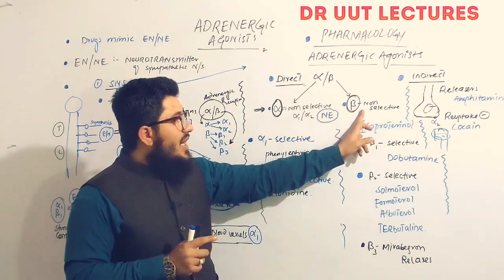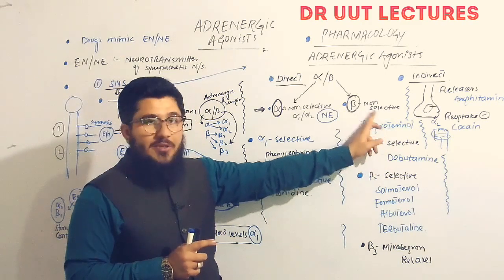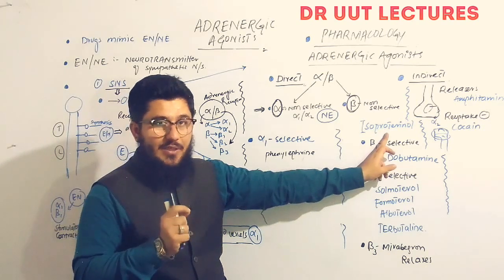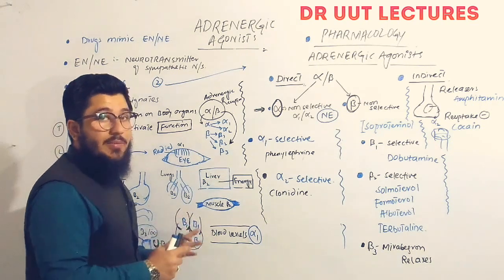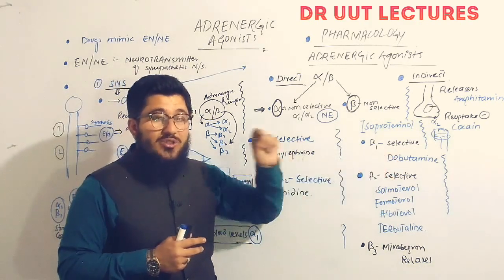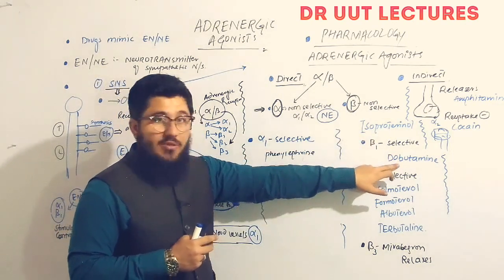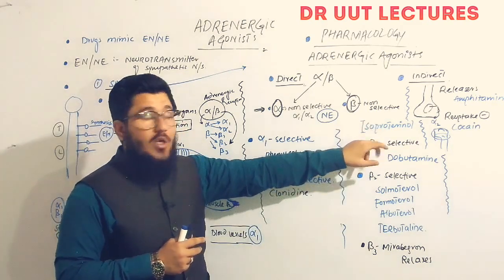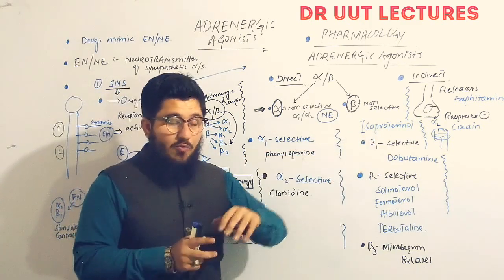Beta non-selective drugs — isoproterenol is a good example — act on both beta-1 and beta-2 receptors. Its most notable action is on beta-1 receptors, which are mostly found on the heart, causing increased heart rate and contraction. Beta-1 selective drugs, such as dobutamine, selectively bind to beta-1 receptors on the heart and are used for cardiac diseases. Beta-1 selective drugs are preferred over isoproterenol when selective cardiac effects are needed, since isoproterenol also acts on beta-2.